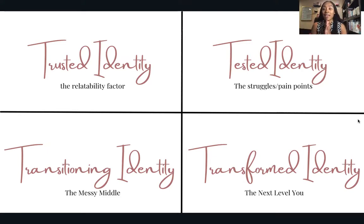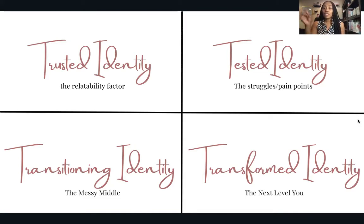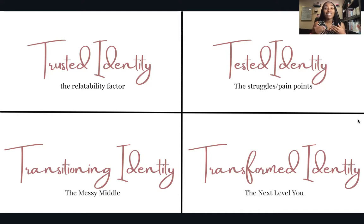The third pillar is the messy middle — the transitioning identity. This is the part of the process that we don't want to talk about. We want the quick, the easy, the fast. We live in a microwave mentality society where we want success and we want it now. We set a goal and we want the outcome now. That has a lot to do with what we see on social media — people who lost all this weight really quickly, manifested their love life, or had a hundred-K month.